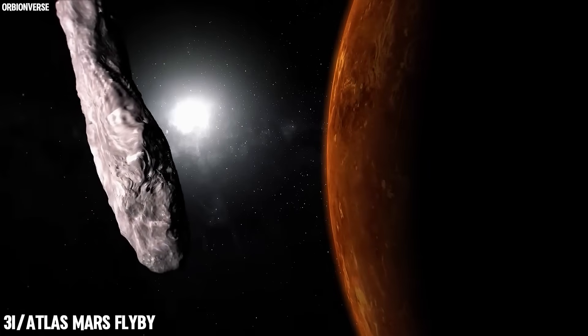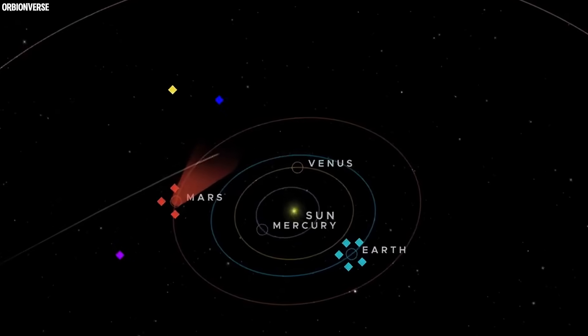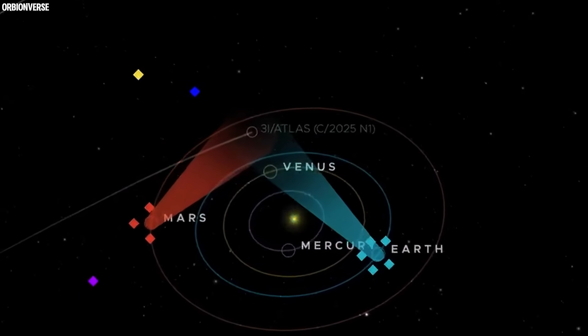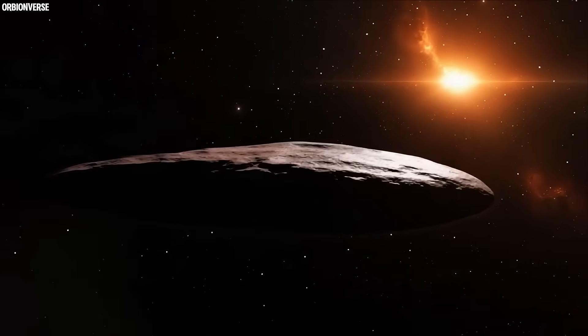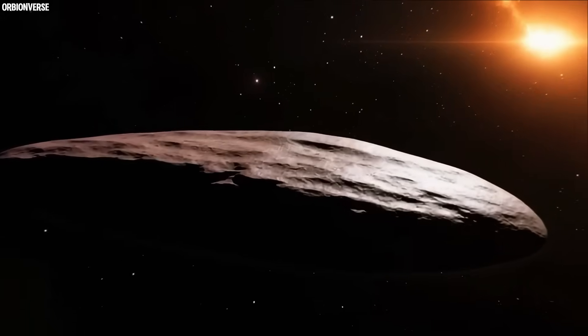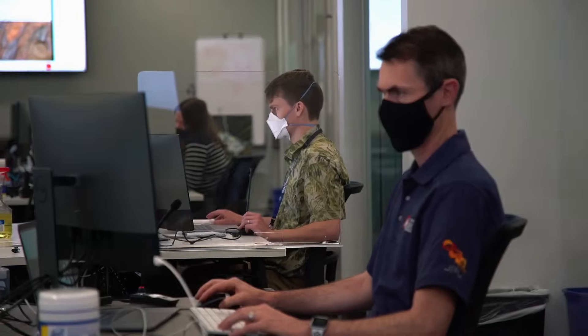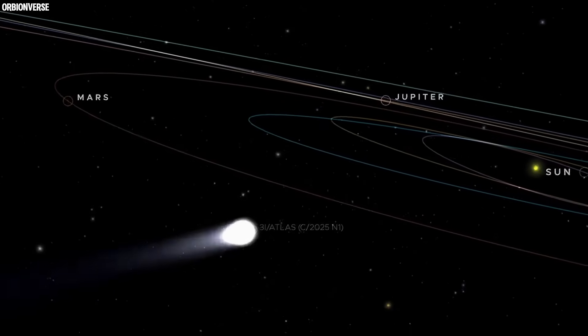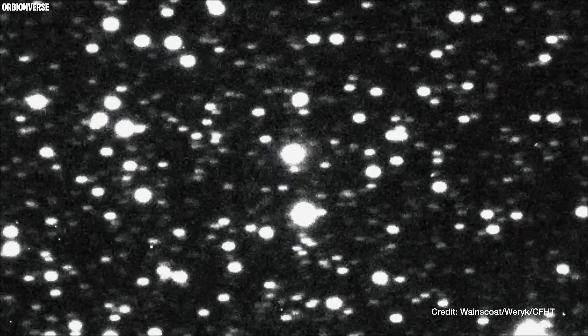Three-Eye Atlas, the same interstellar traveler that brushed past Mars, had entered its next act. And what it's doing now as it nears the sun has left every scientist, engineer, and astronomer speechless. For weeks, instruments recorded impossible readings. Instead of fading like every other comet before perihelion, Three-Eye Atlas was growing stronger, its core expanding, its glow intensifying as if it were feeding on the sunlight rather than evaporating under it.